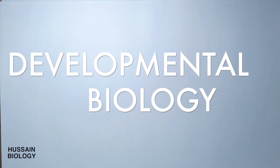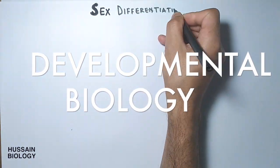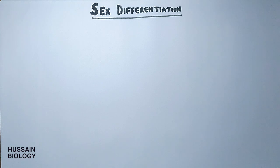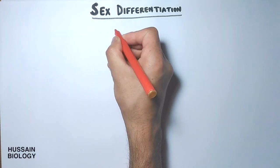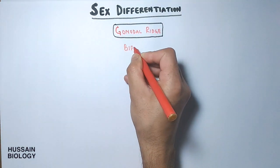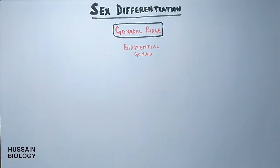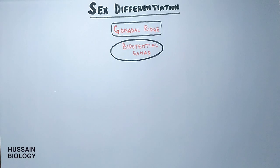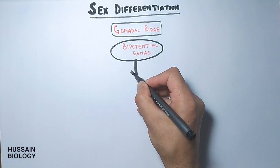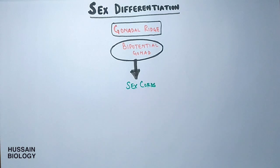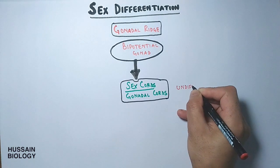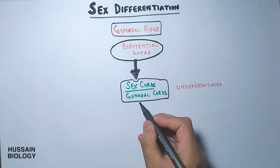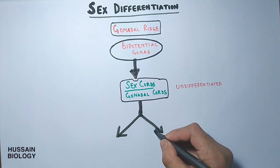This video covers sex differentiation in developmental biology. In sex differentiation, the undifferentiated zygote develops into male or female depending upon the genetic makeup of sex chromosomes. The precursor of gonads is the gonadal ridge, which gives rise to a bipotential gonad — meaning it has the potential to develop into either male or female gonads. This bipotential gonad further gives rise to sex cords (or gonadal cords), which are still undifferentiated. From here, differentiation starts by the presence of XX or XY chromosomes.